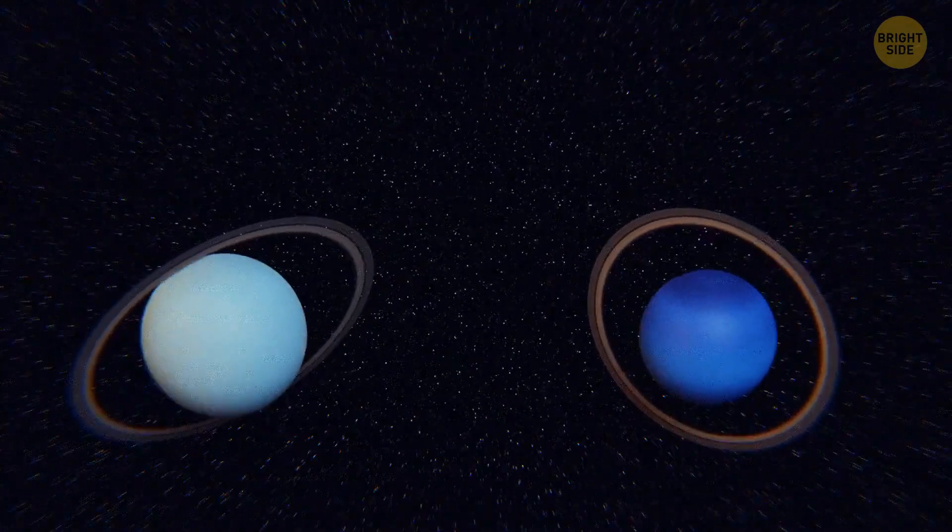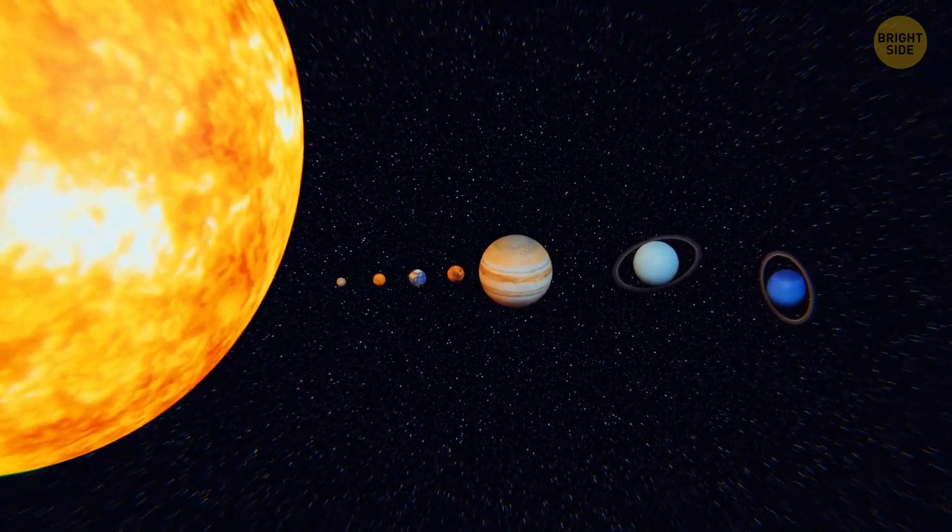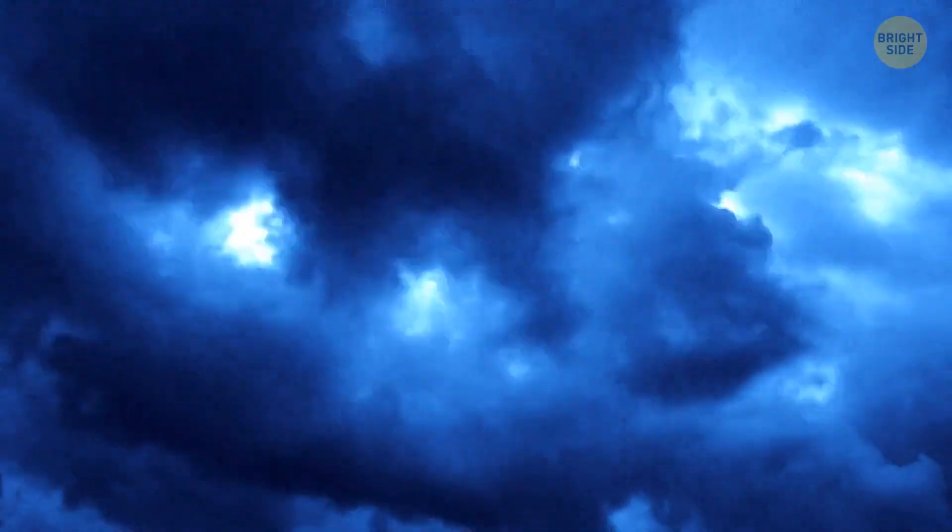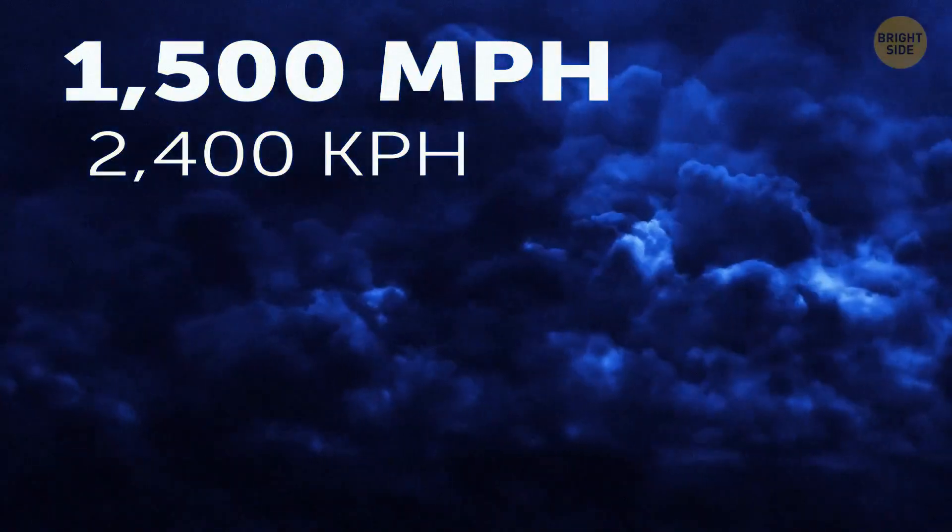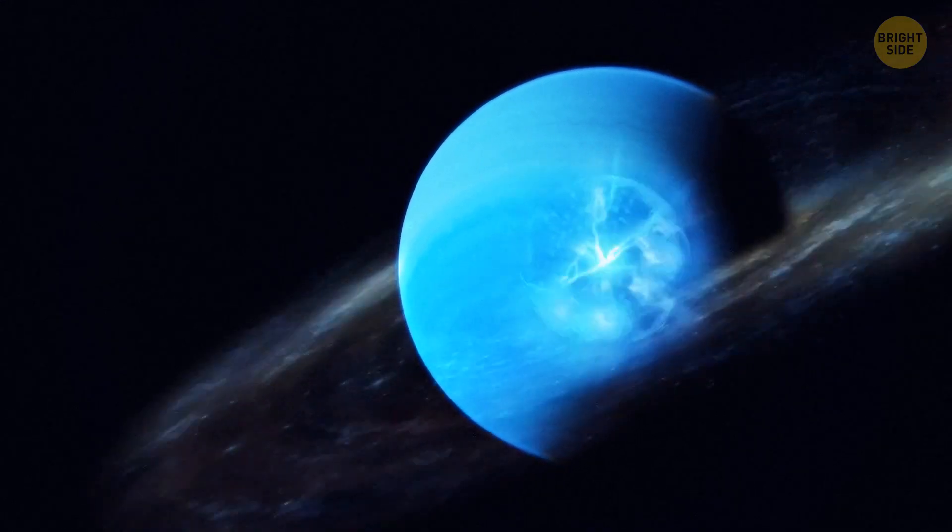Both of these planets emit the same amount of heat, even though Uranus is much closer to the Sun. No one knows why. Neptune has extremely strong winds that can reach a speed of up to 1,500 miles per hour. Can they produce this heat? Or maybe it's because of the planet's core or its gravitational force?